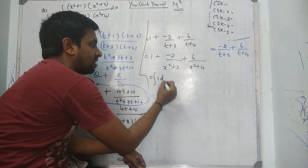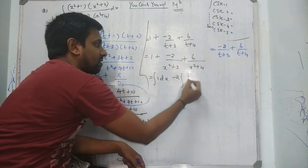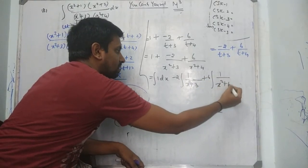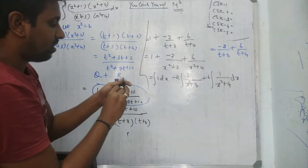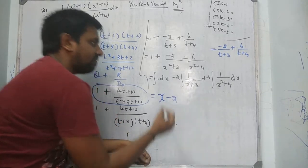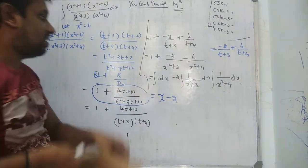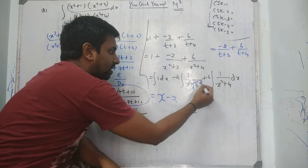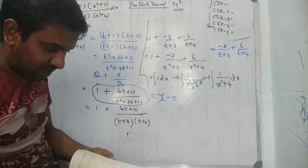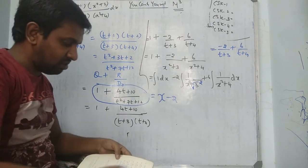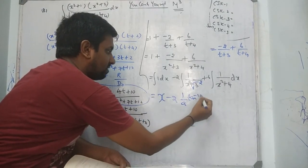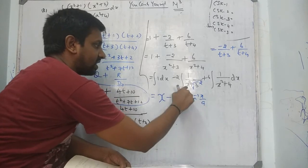So the integration splits into I1, I2, and I3. I1 is simply x. For I2, 1 over (x² + 3) can be written as 1 over x² + (√3)². Using the formula: integration of 1 over (x² + a²) equals 1/a times tan inverse (x/a). Here a equals root 3, so apply the formula from page 308.